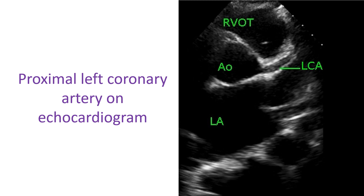In some patients with renal failure, the images are good enough so that the left anterior descending coronary artery can be imaged to a long extent. Probably the waterlogged thorax permits better transmission of ultrasound in these cases.